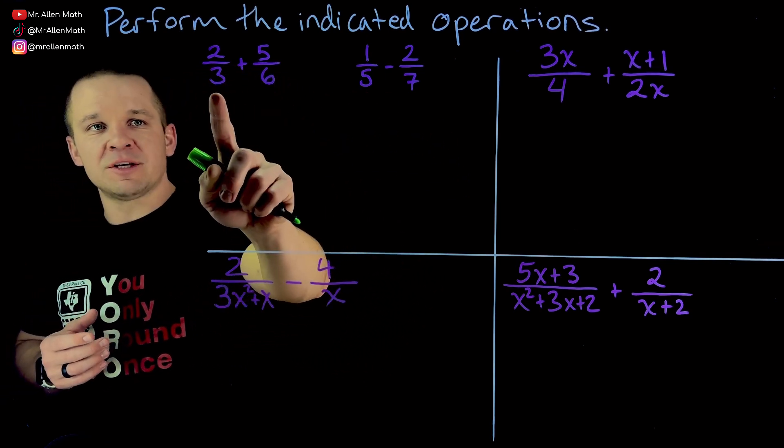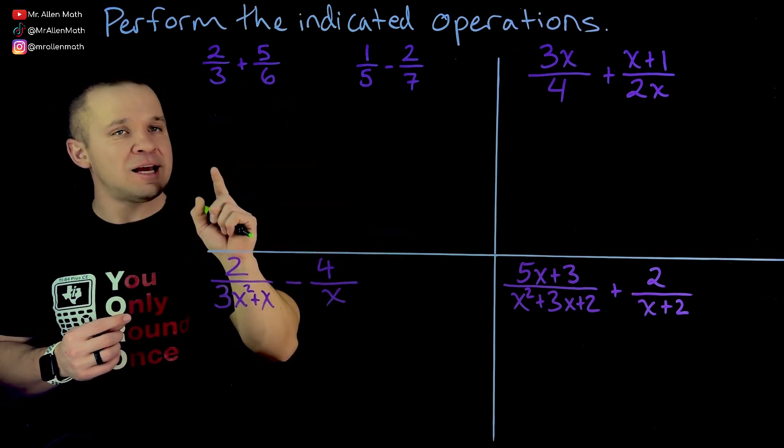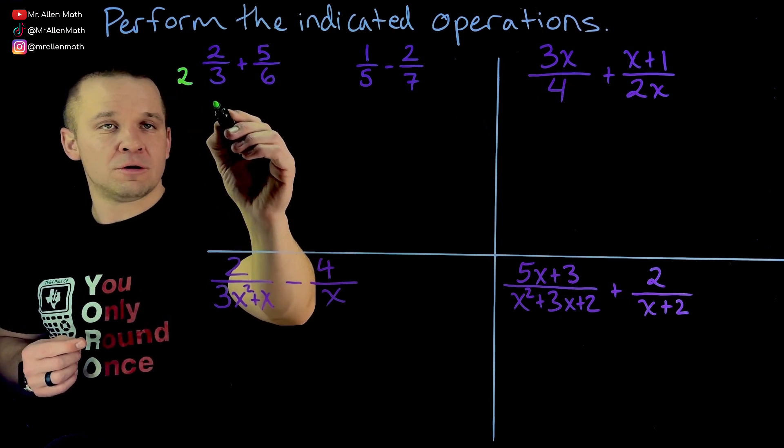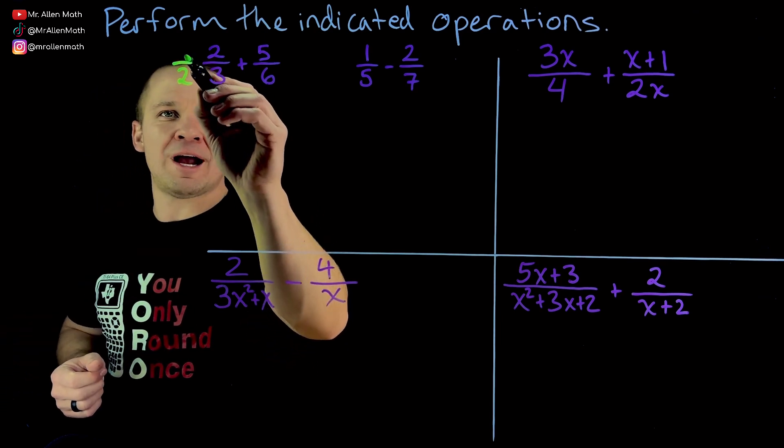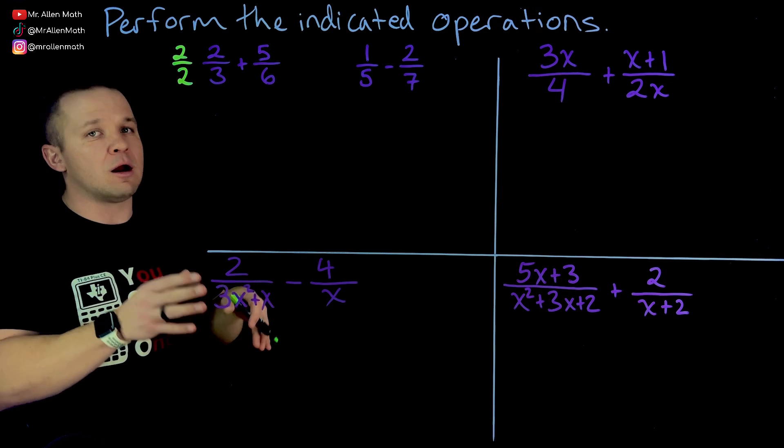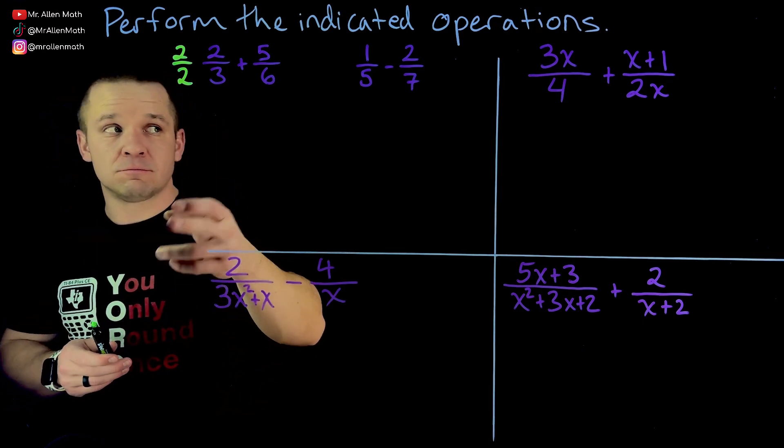So how do I do that? Well, can I rewrite this fraction as something over six to match that guy? Yes, I can. I can multiply three here by a two and it'll become six. But whatever I do to my denominator, I got to do to my numerator as well. And why is that? Not just like, multiply both sides of the equation by the same thing. No. The reason why, what's two divided by two?